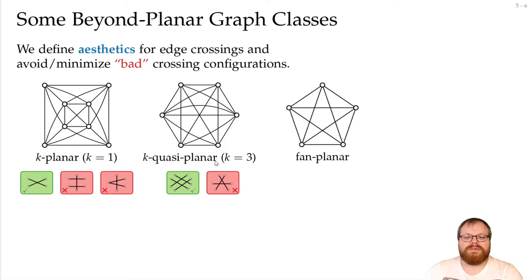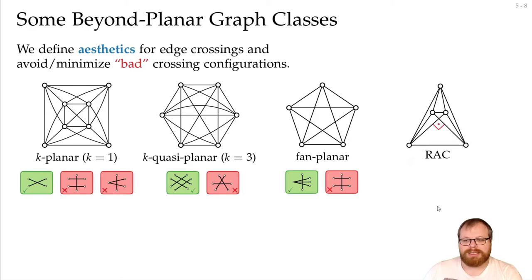There are fan-planar graphs. This is related to the observation we had earlier. Here an edge can be crossed by many other edges, but they all have to have some common vertex. We cannot have two independent edges that cross the same edge. And we also talked about the crossing angles. So we can define the RAC graphs, that are those that we can draw such that every crossing is at a right angle. So we can have crossings like this, we can also have many of those on an edge, but we cannot have smaller ones.